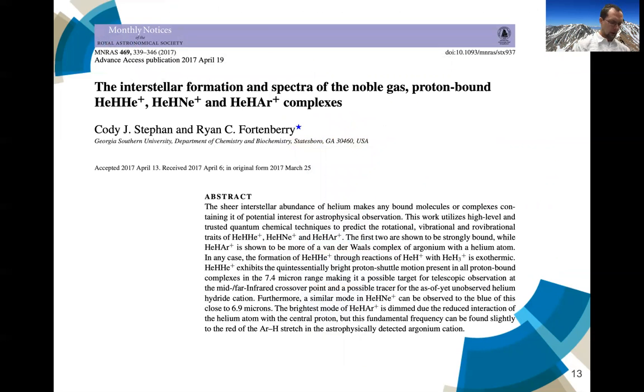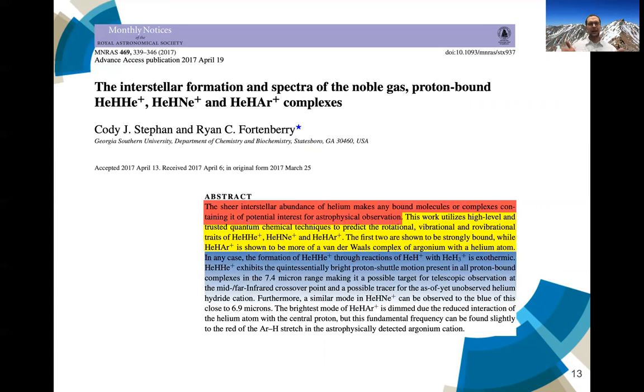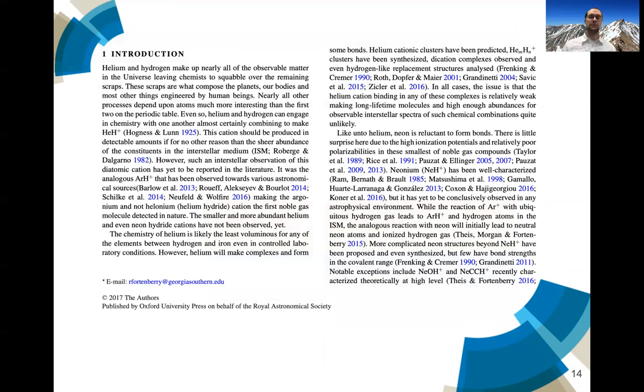I have been able to do this in my own writing, where I have the first sentence of the abstract of this paper, a chemistry paper in an astronomy journal, and I come right out and say that the sheer interstellar abundance of helium makes any bound molecules or complexes containing it a potential interest for astrophysical observation. So right there, there's this title, it's got some molecules that are out there, but now we have tied the chemical nature to the background of the journal in astronomy and astrophysics. Then the next two sentences develop this idea a bit more. We talk about how we did this, some ideas about what was gained, and then we have more detailed information that's pulling down.